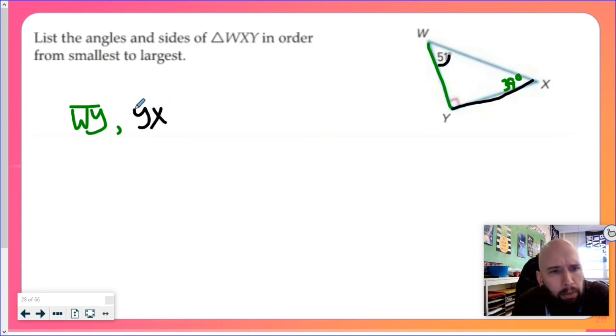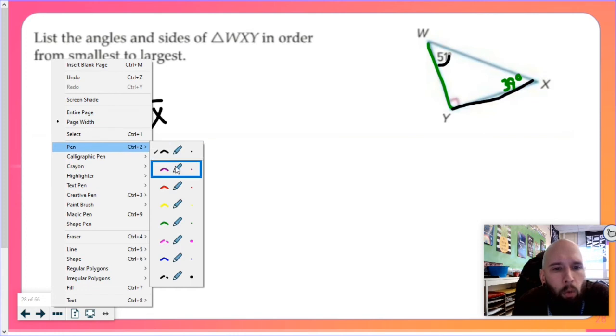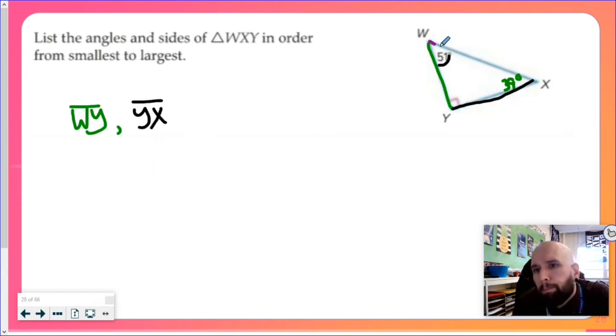It's always the other letters. Fun fact, it's always the other letters. Here's W, so YX is the other letter. And then the only one left is the side opposite of my right angle, so we'll make that purple, and that's WX.